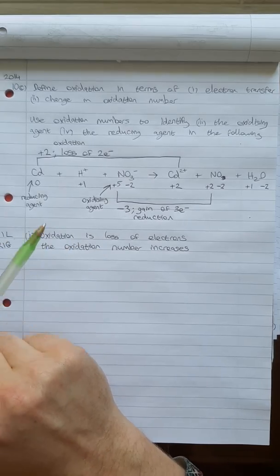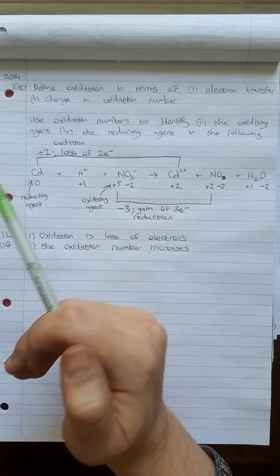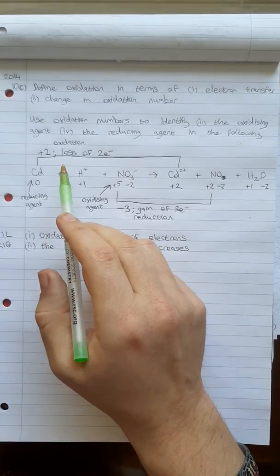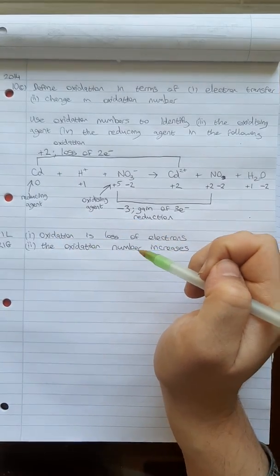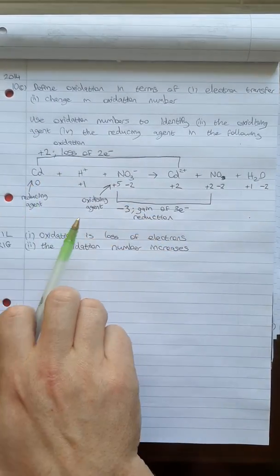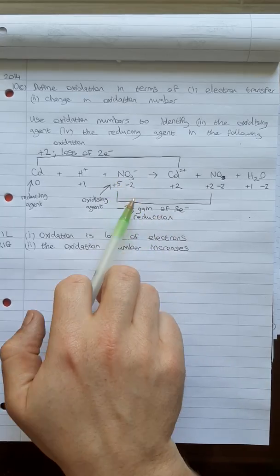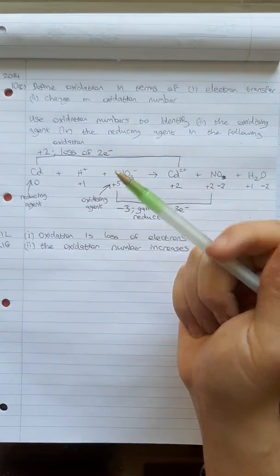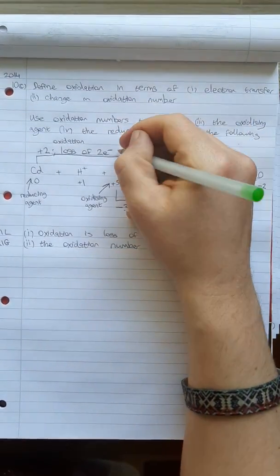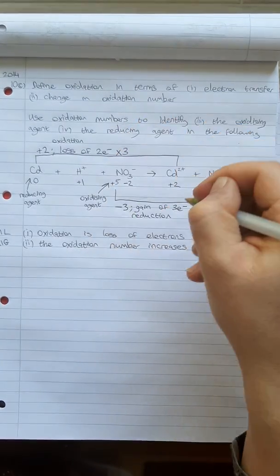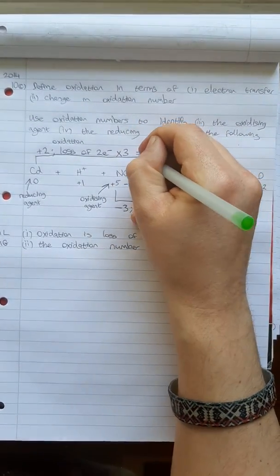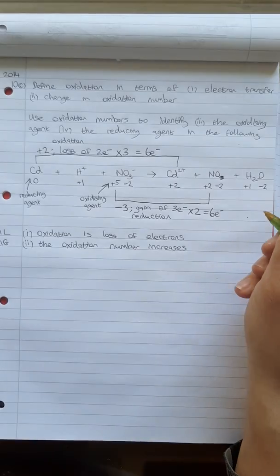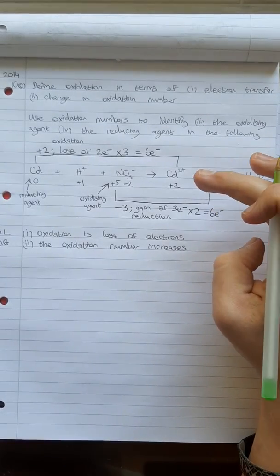Anytime you have a reaction like this, you need to have the same number of electrons being lost and gained because they can't just come out of the air and they can't disappear to the air. So you need to lose the same number as you gain. So here we're losing two for the cadmium and we're gaining three here for the nitrogen. So what we're going to have to do is going to have to multiply it by the lowest common denominator type of thing. So we're going to have to multiply this by three and multiply this by two so that we have a total of six electrons being transferred. Same here. We have six electrons being transferred because we need to have the same number of electrons being transferred.